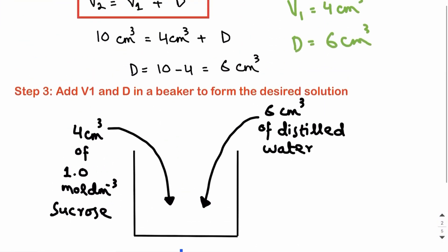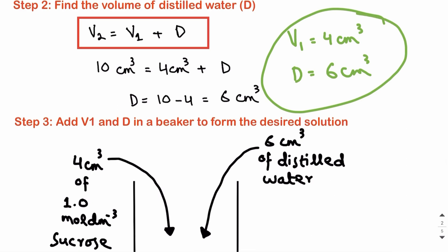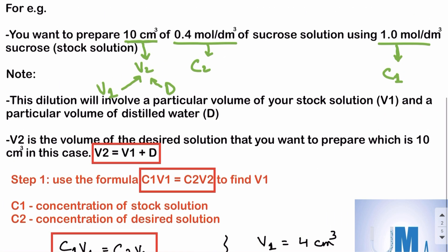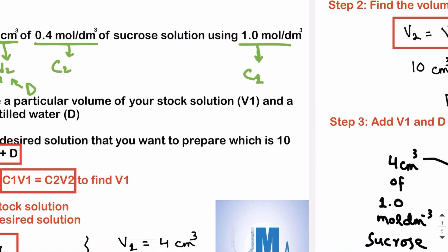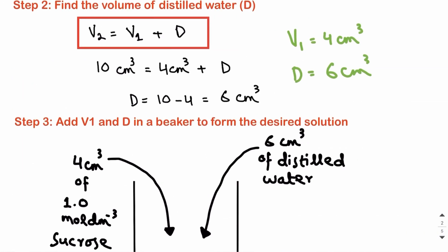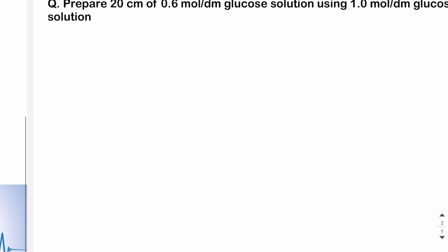Whenever you want to carry out dilution, you need to find V1 and D. First find V1 using C1V1 = C2V2 — the other variables V2, C2, and C1 will always be given. Then find D using the formula V2 = V1 + D, which rearranges to D = V2 − V1.